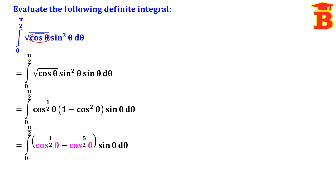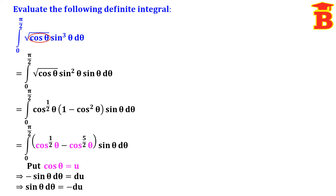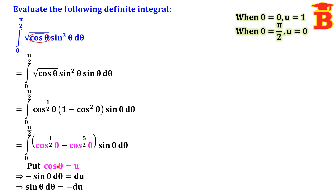Now we use the substitution method. We take cos θ equal to u. Differentiating, minus sin θ dθ equals du, so sin θ dθ equals minus du. We have to change the limit: if we put the lower limit x = 0, cos 0 = 1, so u equals 1. If we put the upper limit π/2, cos(π/2) = 0, so u equals 0.